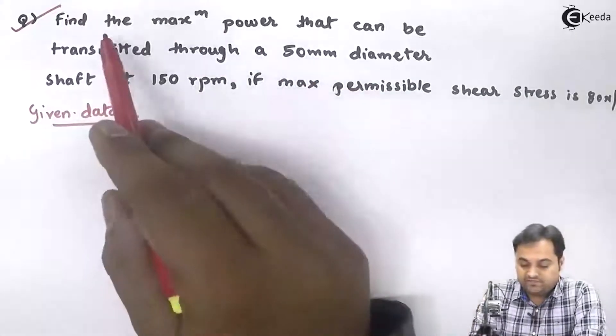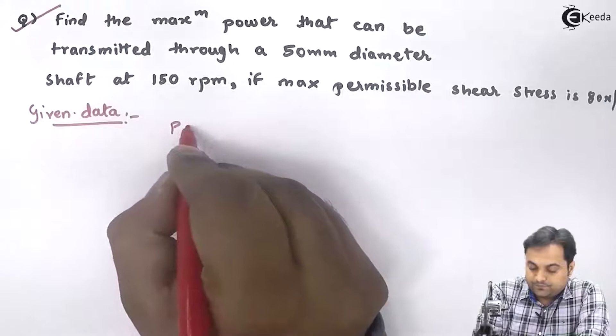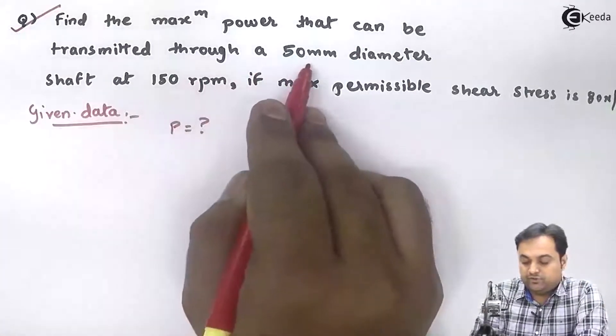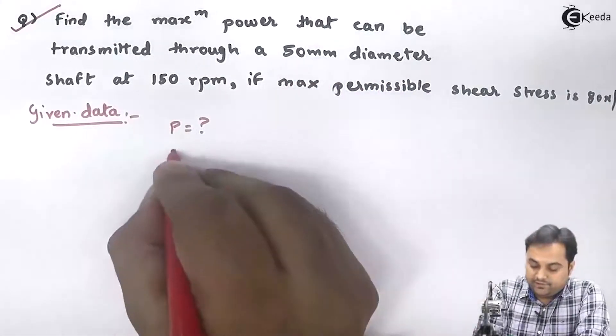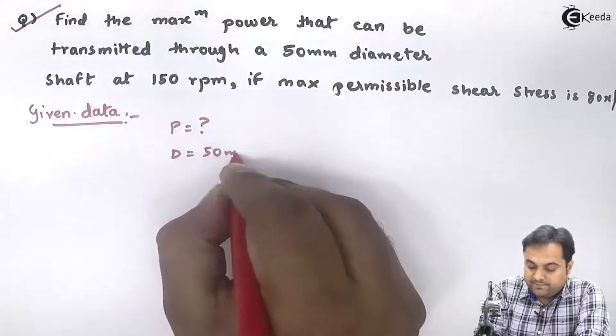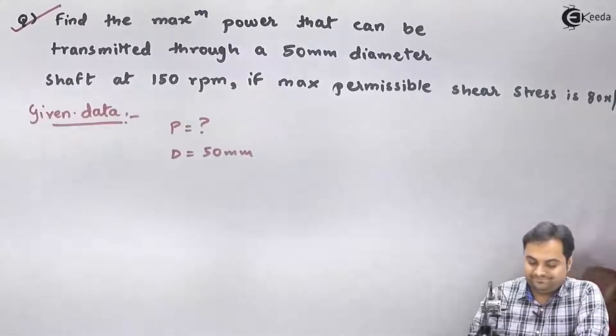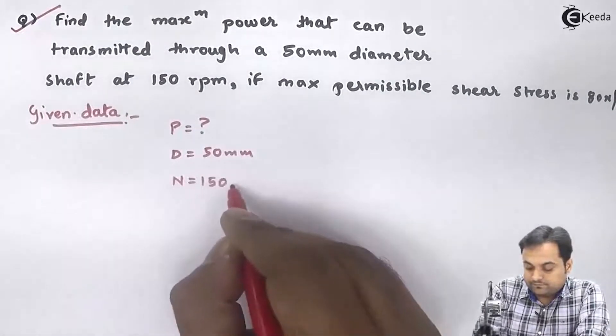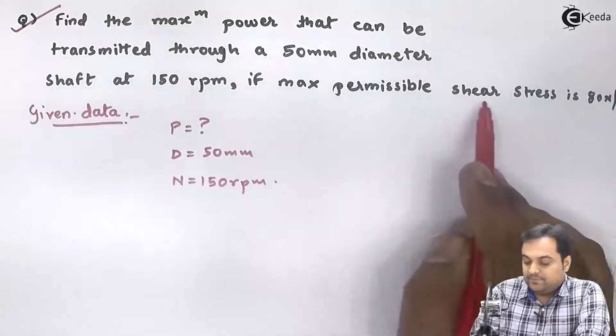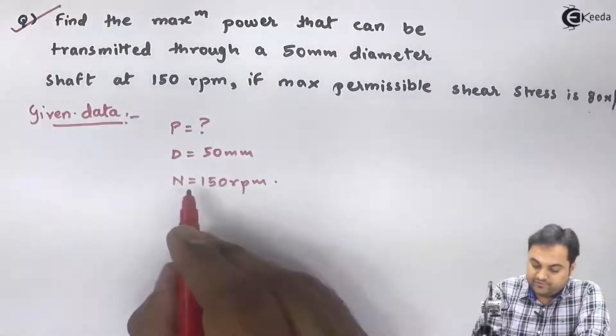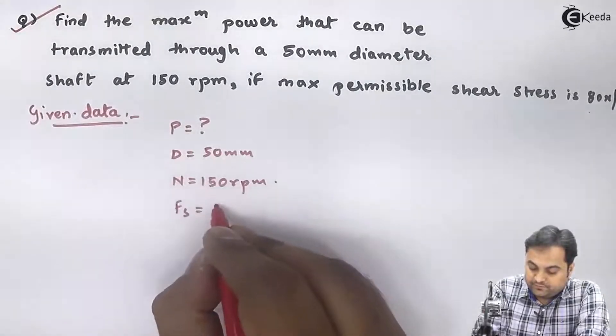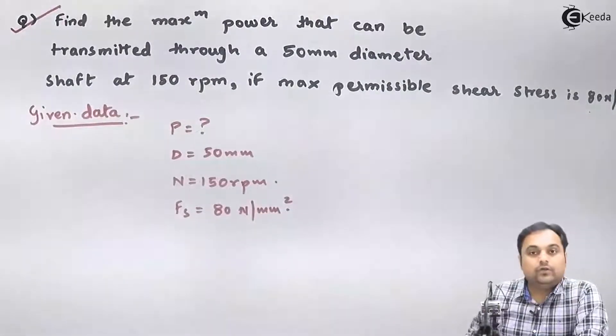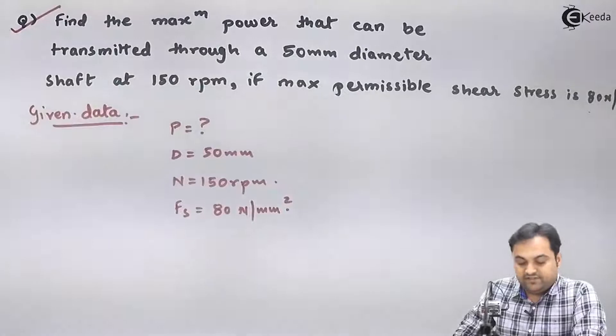The question is find the maximum power, so capital P is what we have to calculate, that can be transmitted through a 50 mm diameter shaft. The diameter D is 50 mm, so it is a solid shaft at 150 rpm. Maximum permissible shear stress is 80 Newton per mm square, so FS value is 80 Newton per millimeter square.